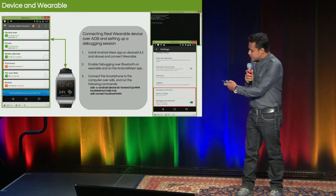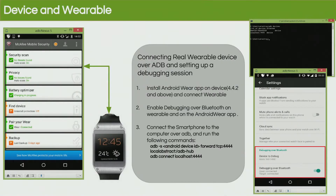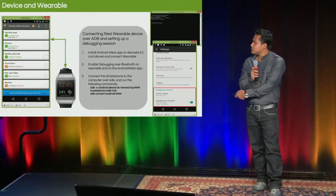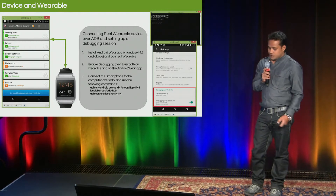Once this is done, you can see the top entry is the smartphone and the second one, localhost 4.4, is the smartwatch device. Once we get the context of this, we can write any automation scripts or automation code on these watches.